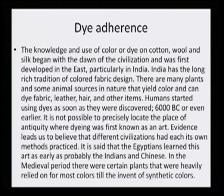It is said that Egyptians learned this art as early as probably the Indian and the Chinese. In the medieval period, there were certain plants that were heavily relied on for most colors till the invention of the synthetic colors. From this we clearly understand that we were the forerunners in the art of natural dyeing. The other civilizations that used natural dyes were Egyptian and Chinese, so at least that much is confirmed that we were one of the first to use natural dyes.